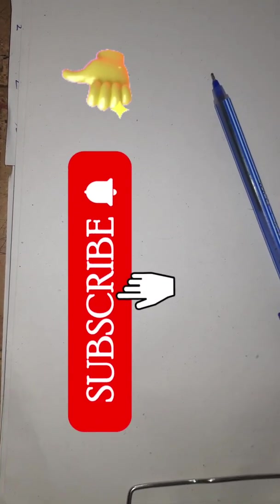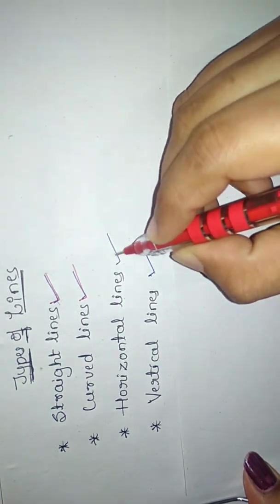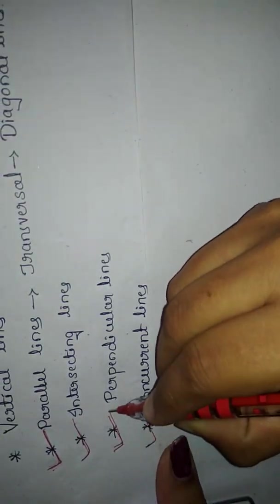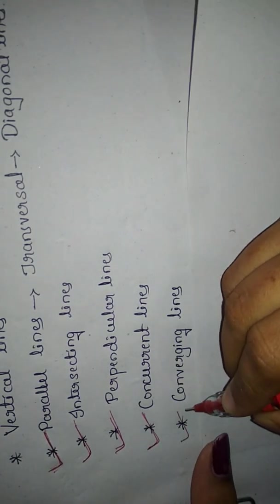I am Sangeeta, your maths teacher. In my previous video we have already learnt about the definition of lines and types of lines. In those types we studied straight lines, curved lines, horizontal lines and vertical lines. Still more types were remaining: parallel lines, intersecting lines, perpendicular lines, concurrent lines, converging lines and diverging lines. Today in this video we are going to study about those remaining types.